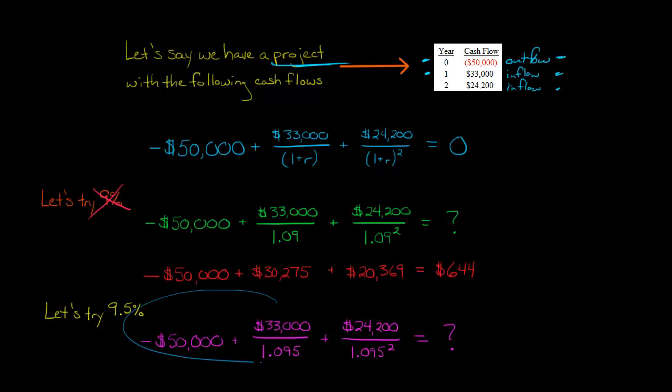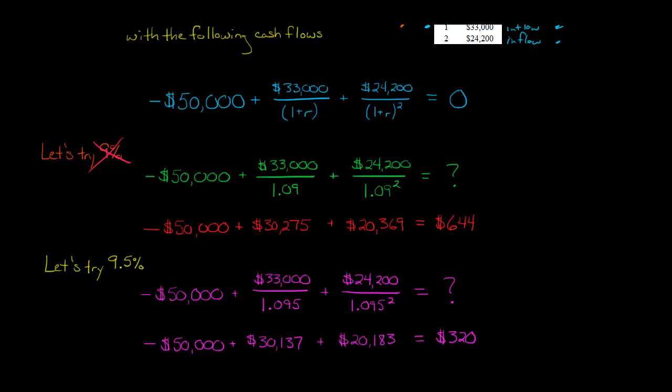So again, we just plug in. This is the same formula as here. But now for the R, we have 0.095. See that? So now it's 1.095 is what we're dividing the 33,000 by. And then the 24,200, we divide by 1.095 to the second power. And then what we get here, I've divided all this out for you. But it's just basically just doing division here. This equals this and so forth. So that gives us an NPV of $320.